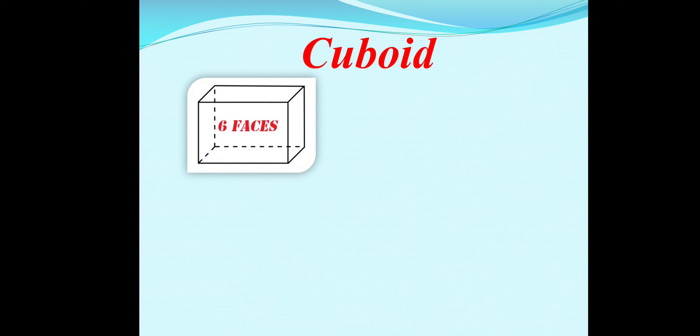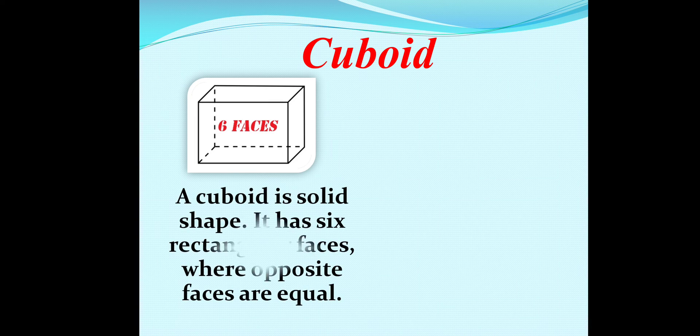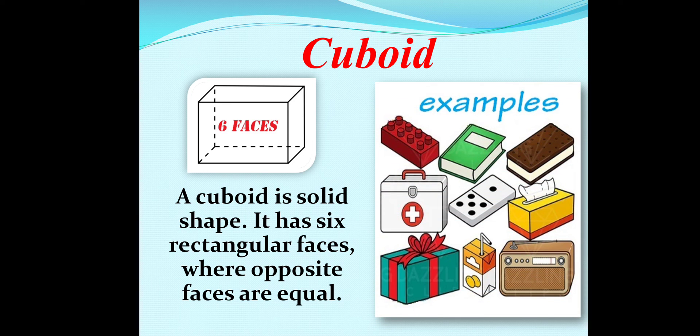Then next, I would like to explain you about cuboid. This shape is called cuboid. A cuboid is a solid figure. It has six rectangular faces where opposite faces are equal. Here are some examples of cuboid: book, radio, tissue box, juice box, cubic building box, first aid box and many more.